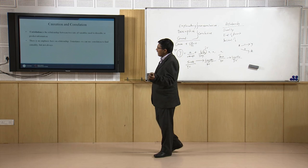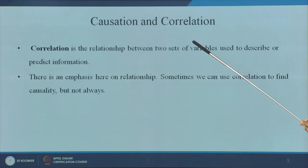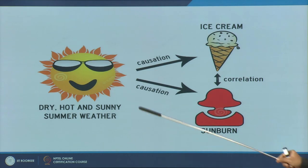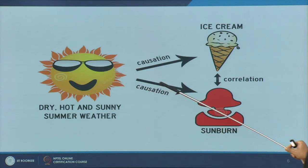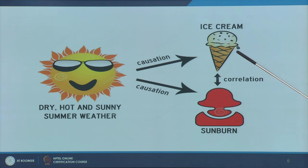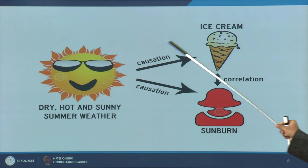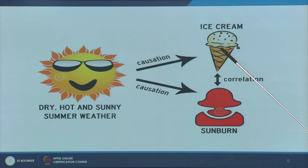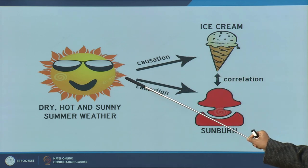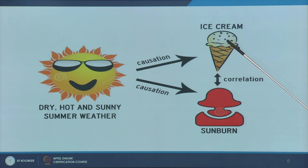One has to understand that causes and correlation are not the same. For example, when summer increases, the desire for ice cream increases — more the temperature, more the desire. But consider the melting of ice cream — that is caused by temperature. What is the cause behind sunburn? Again, temperature.